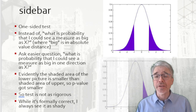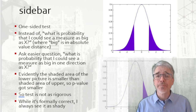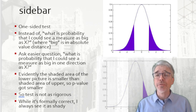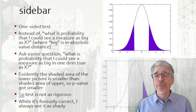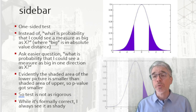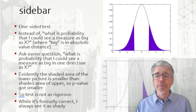Another thing that commonly gets done in principles of statistics is you're shown how to construct a one-sided test. So instead of asking what's the probability that I could see a measure as big as x in absolute value, we ask the easier question: what's the probability that I could see a measure as big in only one direction? In those little pictures, that's the light purple shading, not the dark purple — only one of the tails.